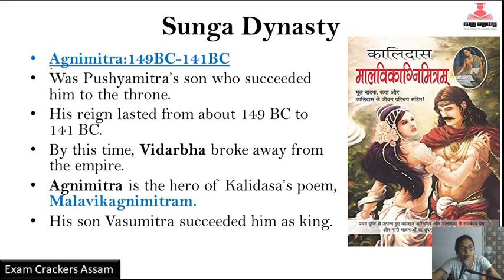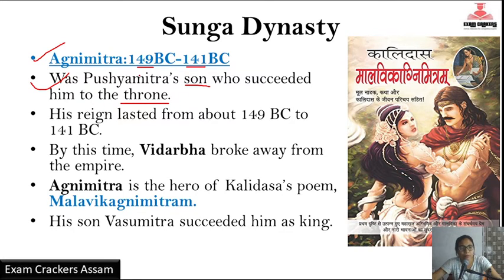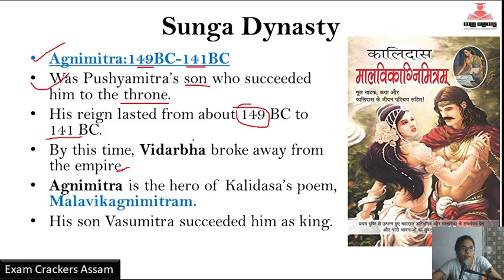After Pushyamitra Sunga passed away, he was succeeded by Agnimitra. Agnimitra is an important ruler. He was Pushyamitra's son who succeeded him to the throne, reigning from 149 BC to 141 BC. By this time, parts of the Vedic cultural empire were beginning to break away.